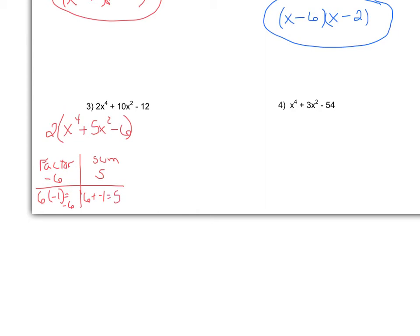This GCF that I factored out is still going to stay in front. I'll set up my two sets of parentheses. But this time, I need two numbers or two variables to multiply together to be x⁴. I know x² times x² is x⁴, so instead of putting an x in front, I'm going to put an x² in front. Then I'm going to say plus 6 and minus 1.